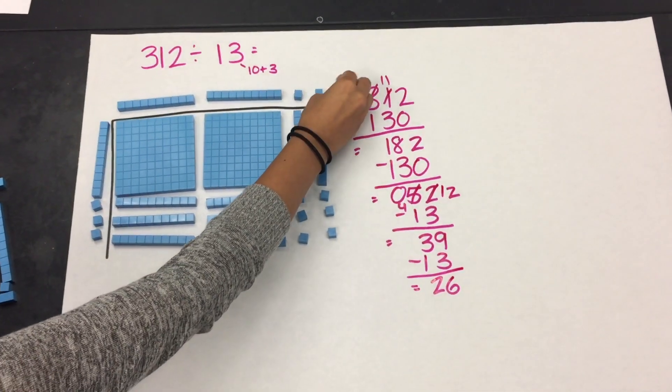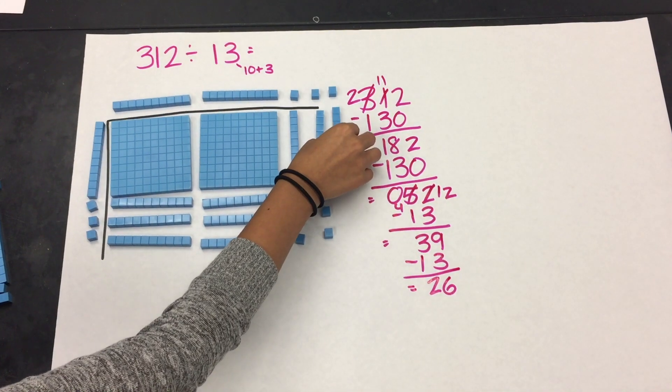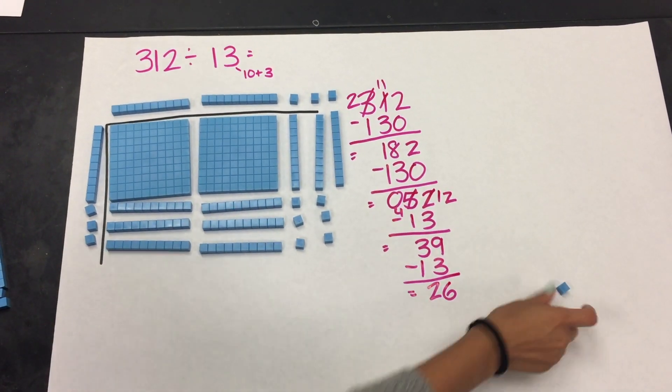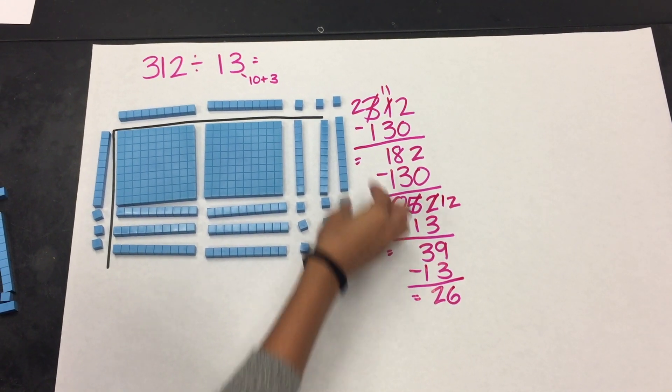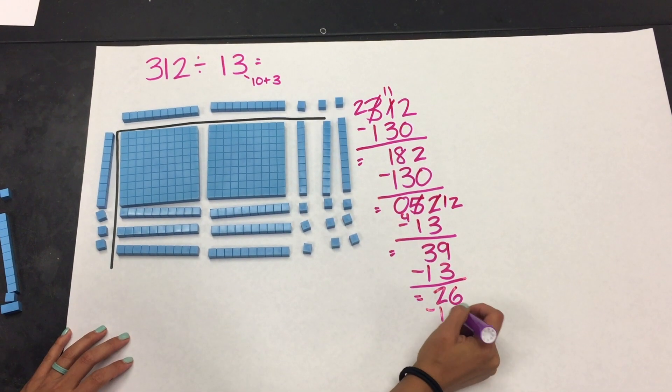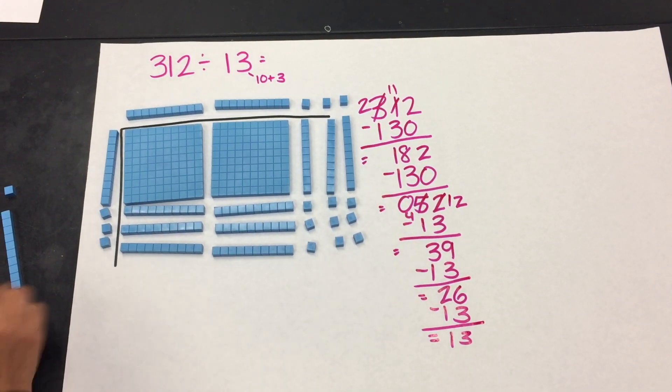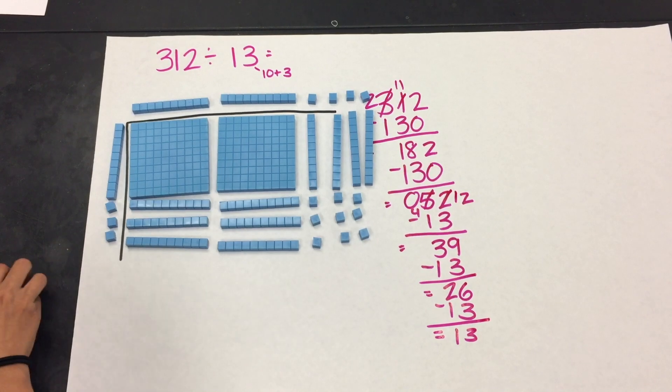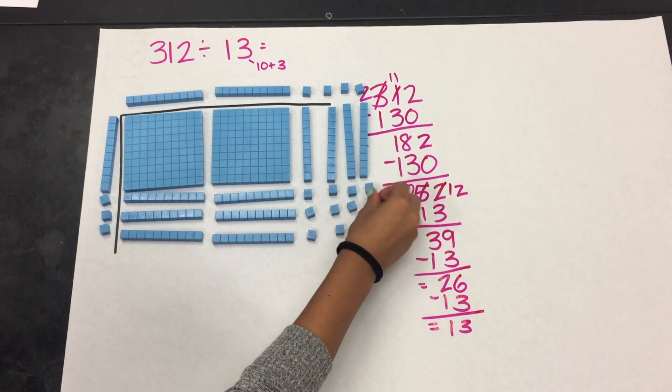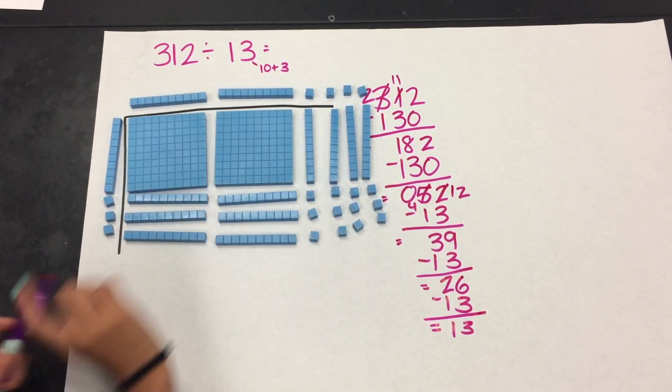And I can see that I can build another 1 for my quotient, and I'm going to take away another 13. And I'm getting super close, so I know just 1 more will get me to a total of 312 on the inside.